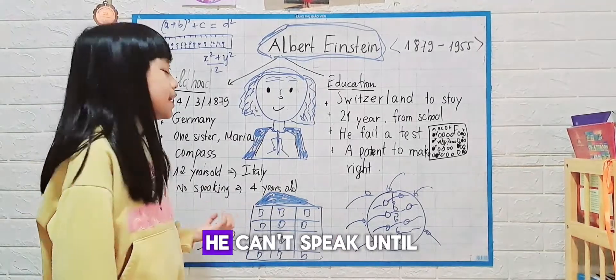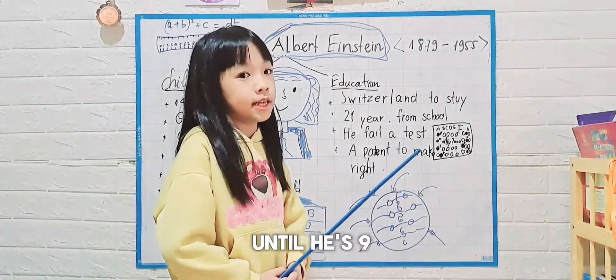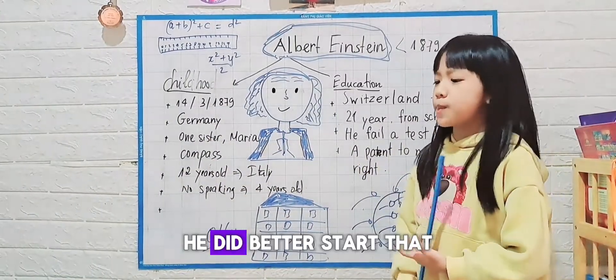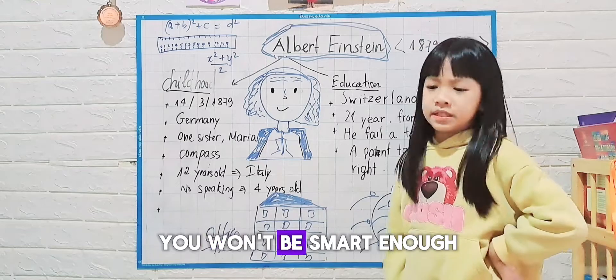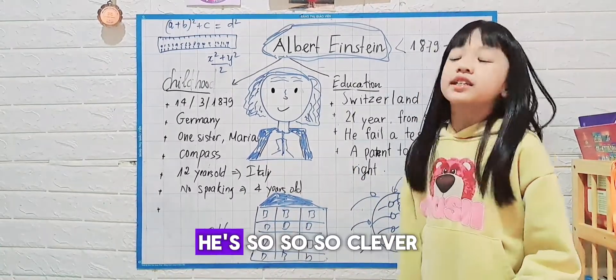Some people said that he couldn't speak until he was four and couldn't read until he was nine. His parents thought that he wouldn't be smart enough, but he was brilliant. Can you believe that? He was so clever.